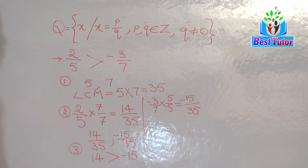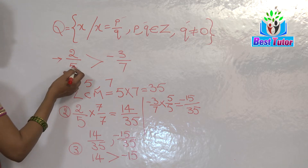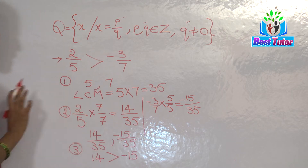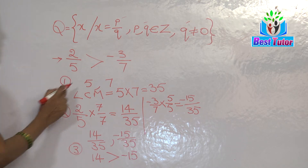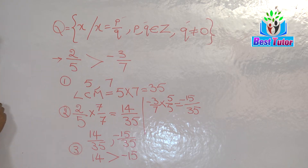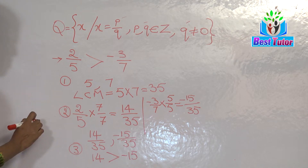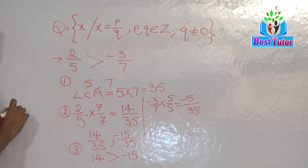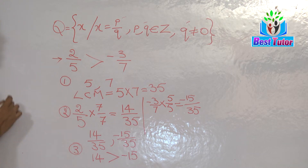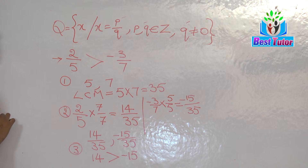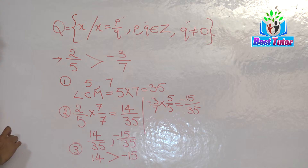I would like to add one more point here. Even without doing the entire procedure, just by observing these two fractions — one is a positive fraction and the other is a negative fraction — we already know that positive fractions are greater than negative fractions, so you can answer directly. That shortcut is applicable for a one-mark question. But if the same question is given for three marks or more, the entire procedure must be shown.